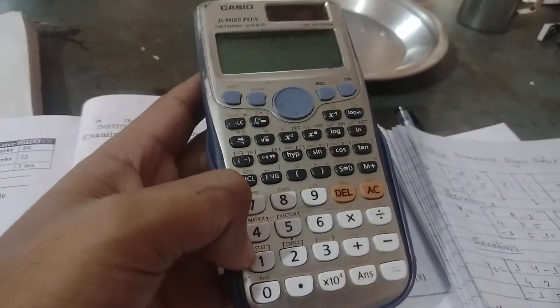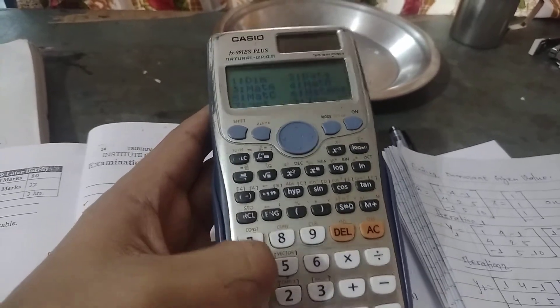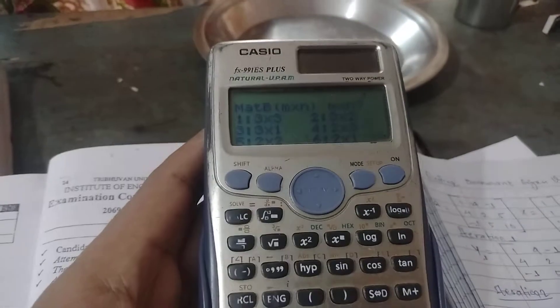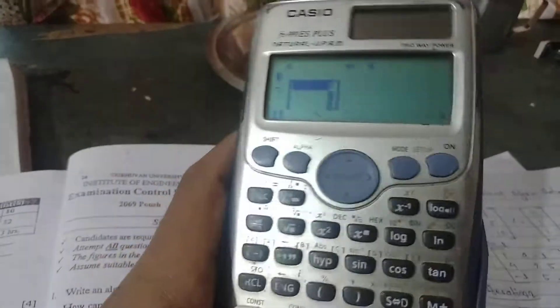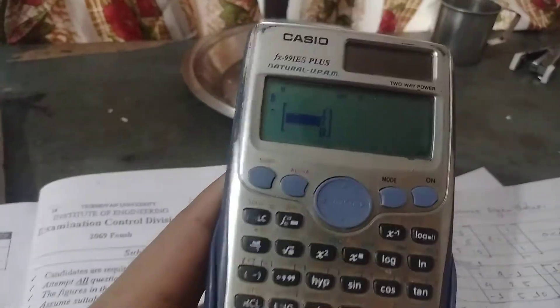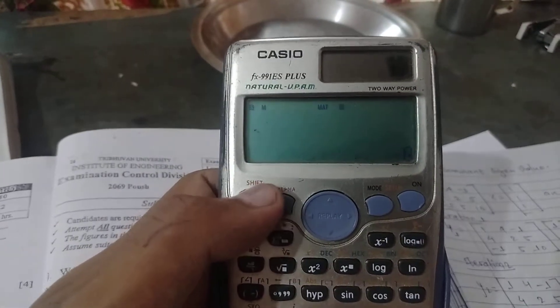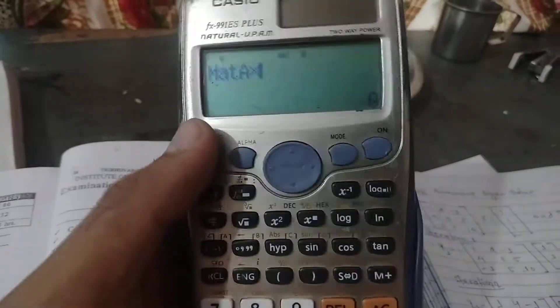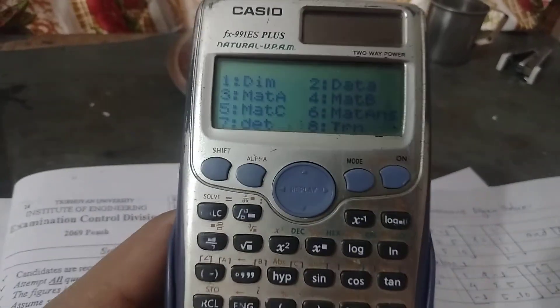Shift 4, matrix. Give dimension for that, which is now already we have saved that in A. Now we have to give B, which is of 3 into 1. Press 3, give 1, 1, 1, 1. Now we have saved it. Now multiply. Shift 4. Now 3, matrix A into shift 4, matrix B.